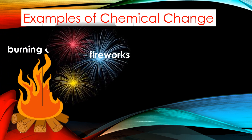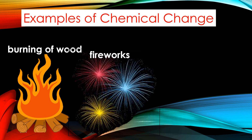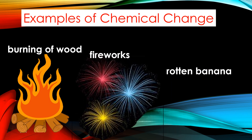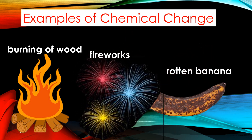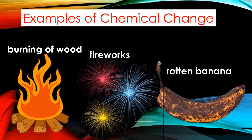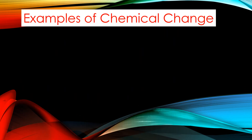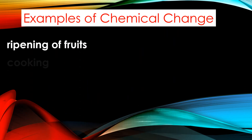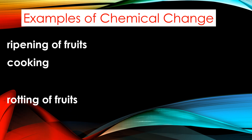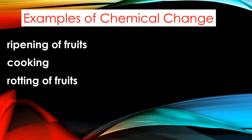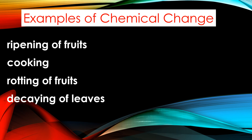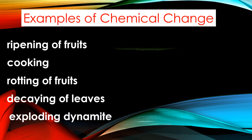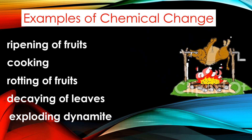Other examples of chemical change are rotting of a banana, cooking, rotting of fruits, decaying of leaves, and exploding dynamite.